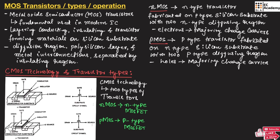This is the structure of PMOS, which is a P-type transistor. It is fabricated on an N-type silicon substrate and consists of two P-type diffusion regions as shown in this figure. The majority charge carriers in PMOS are holes, while electrons are the majority charge carriers in NMOS.